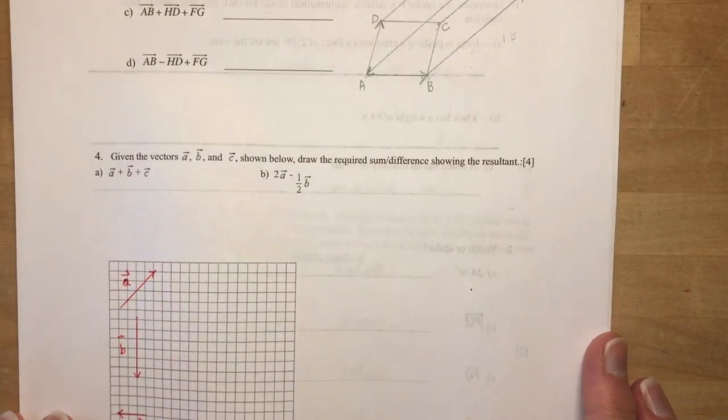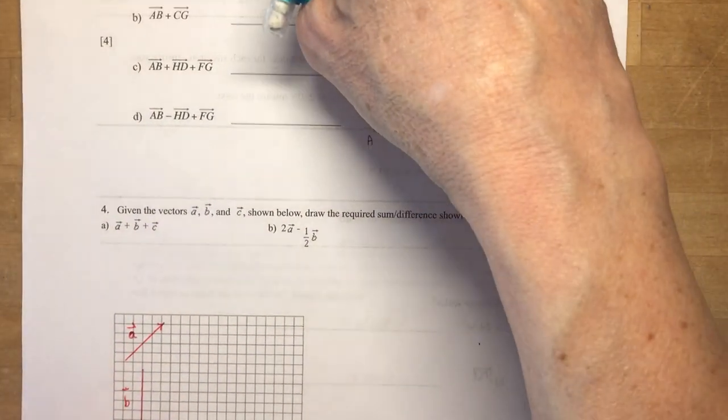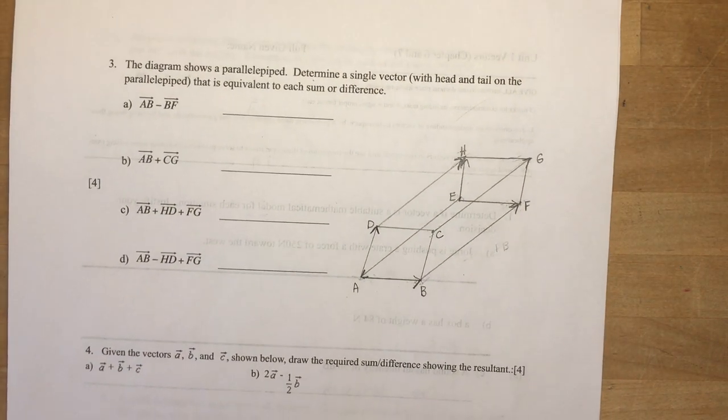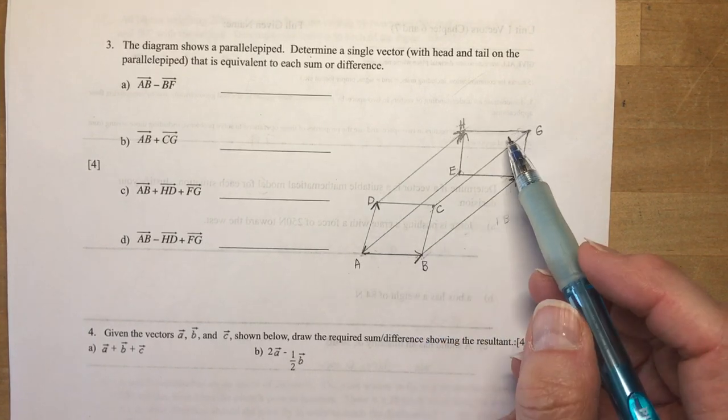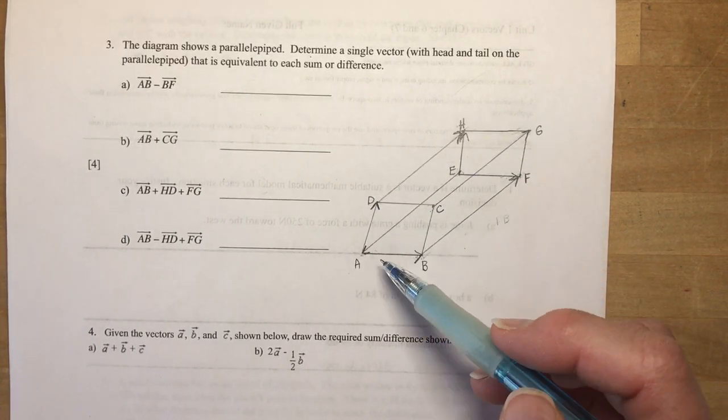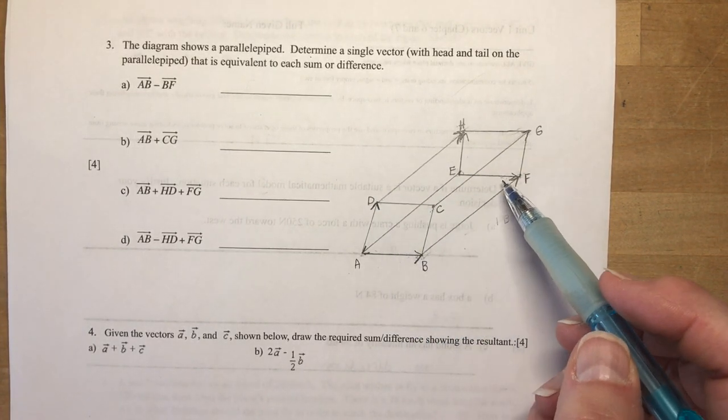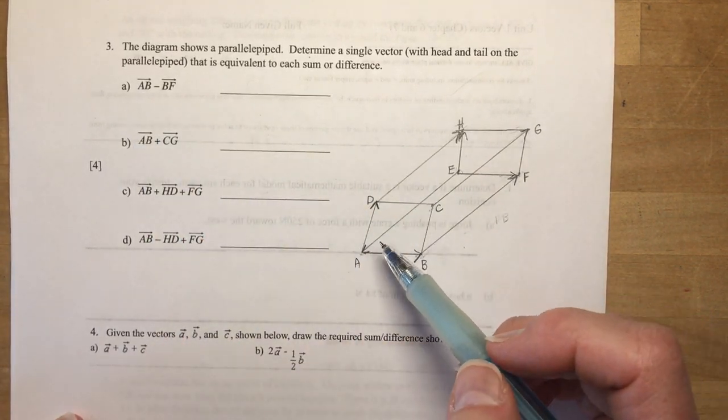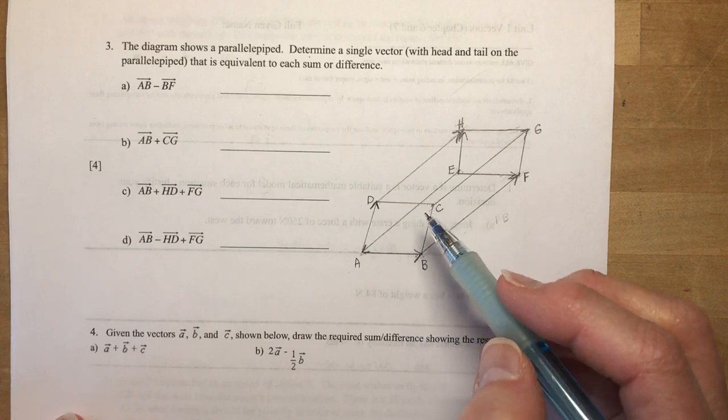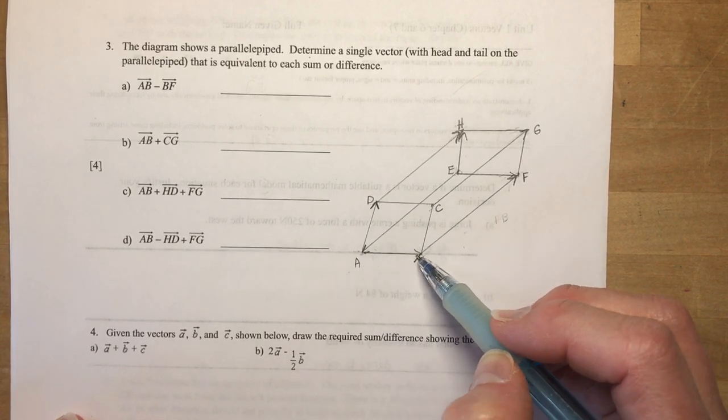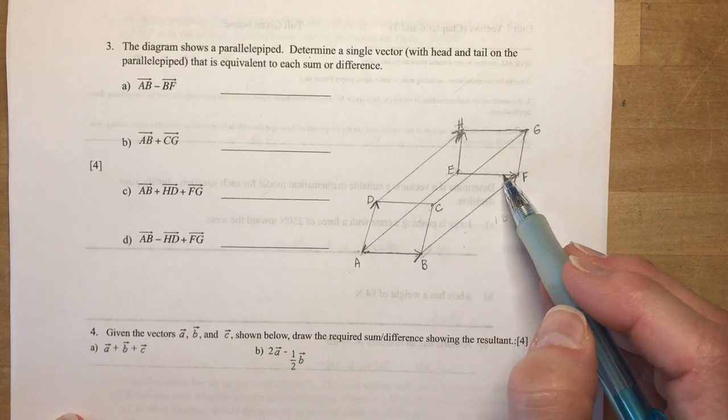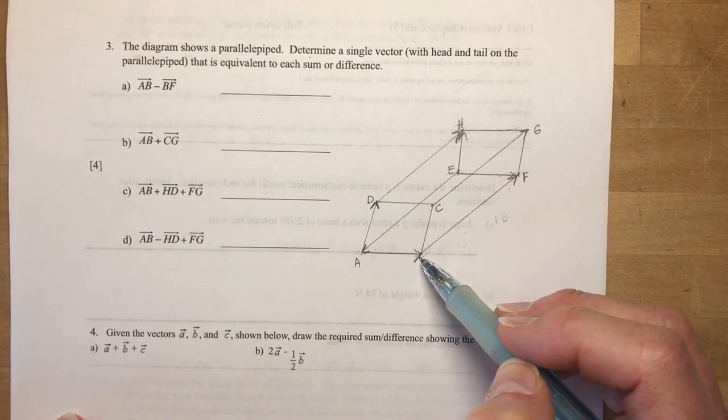Question three. The diagram shows a parallelopiped. You don't have this diagram in the handout because it was handwritten, so I've written it here for you. You have all these vertices that you have to make some sense of in terms of vectors. They want to know what is AB minus BF. So AB is going in this direction. So any of these vectors like HG, EF, DC, they could all be represented by AB.